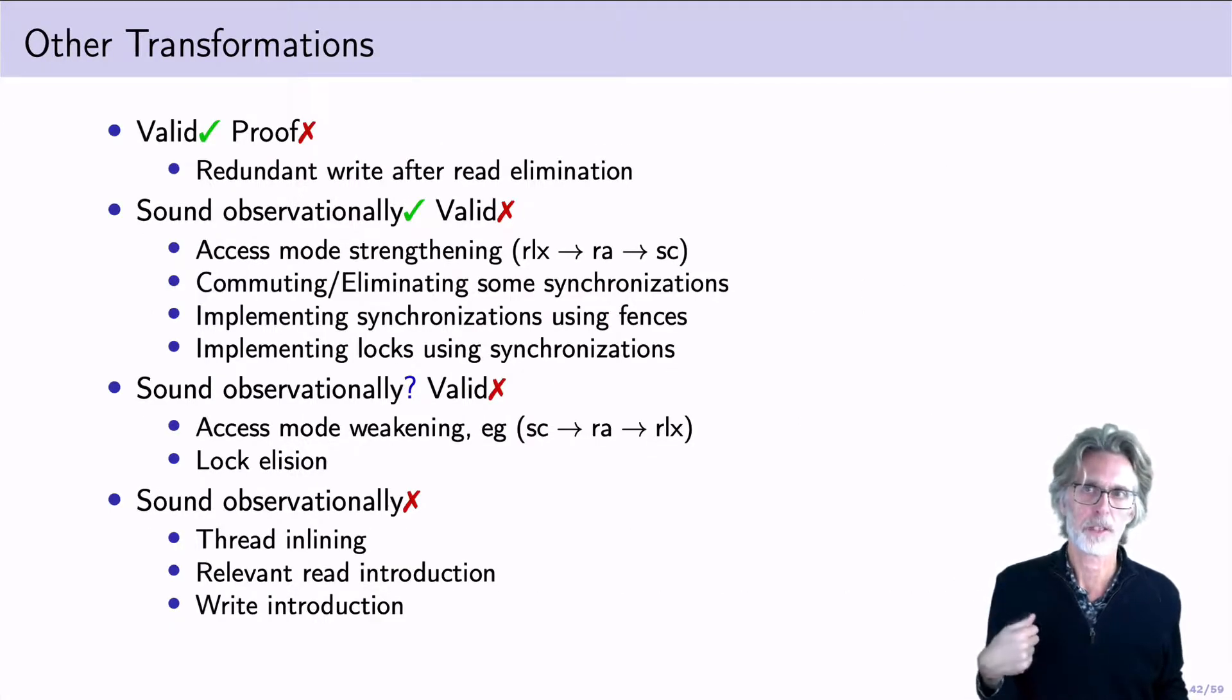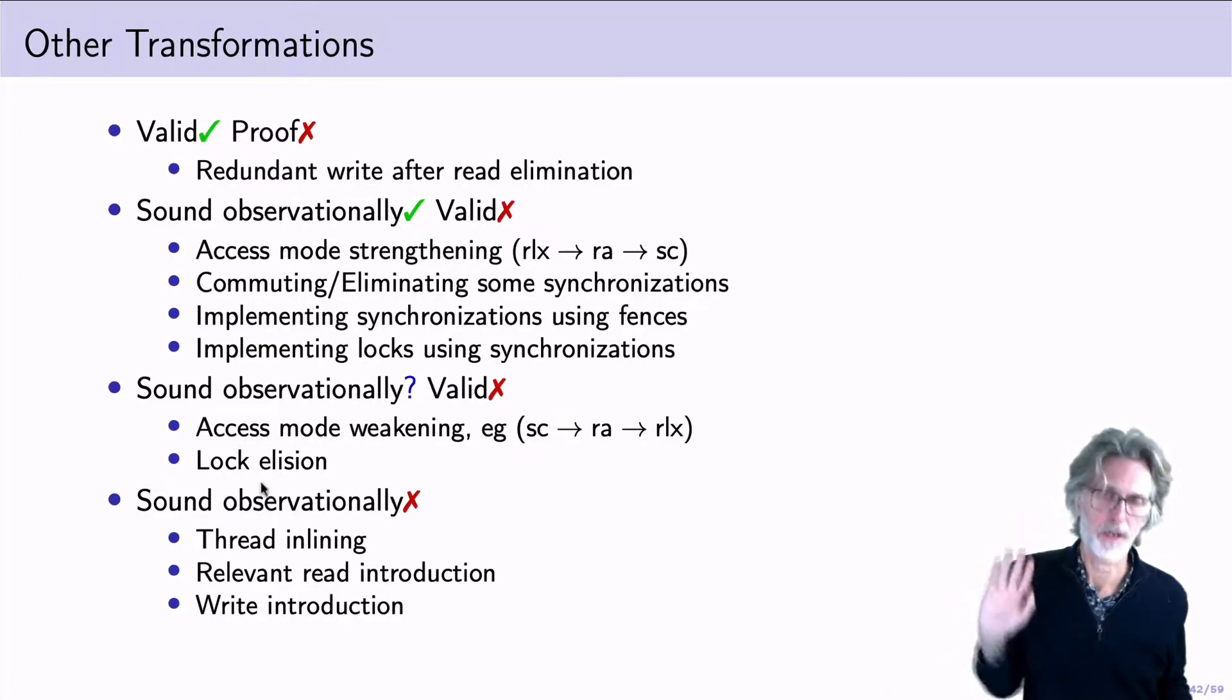In the paper, we discuss many transformations, but not all of them. So for example, redundant write after read elimination, we believe it's valid in the model, but we haven't proved it. There's many things that are sound observationally, but are not valid in the model, such as access mode strengthening, commuting synchronizations, implementing synchronizations using fences. Other transformations are sound observationally in some contexts, but still are not valid in the model. This includes access mode weakening and lock elision. And other observations simply aren't going to be valid observationally, including thread inlining, relevant read introduction, and write introduction.